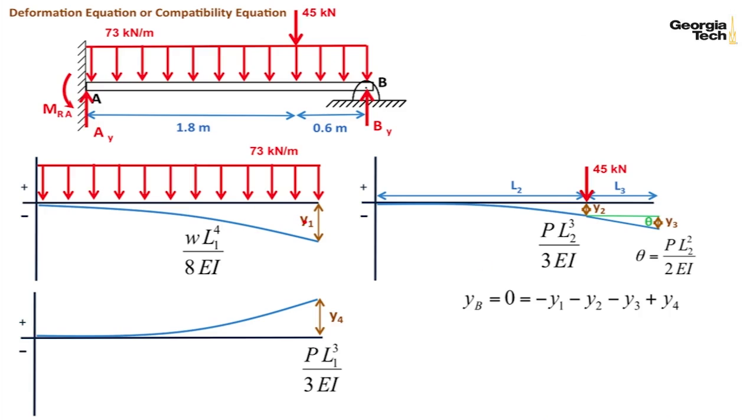It's equal to Y_1, which is down negative, Y_2, which is down negative, Y_3, which is down negative, and then pushing back up, B_Y is plus Y_4. If we substitute those values in, we're going to get this result. You can see now that the only unknown that we have is B_Y.